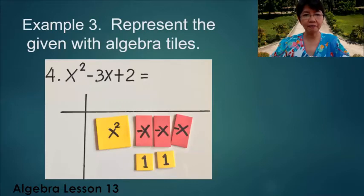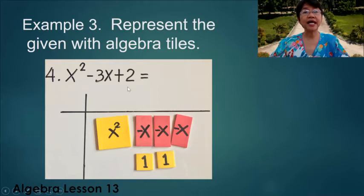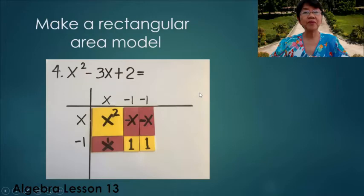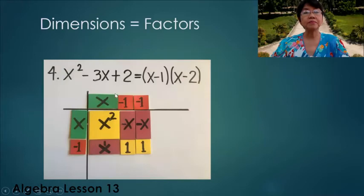Example 4: We represent the given with algebra tiles, x² - 3x + 2, and form a rectangular area model. We have x and -1, then another x and -2. The factors are (x - 1)(x - 2).